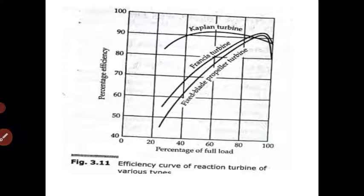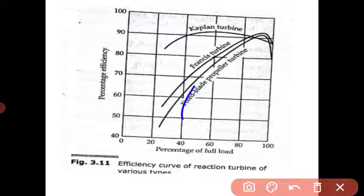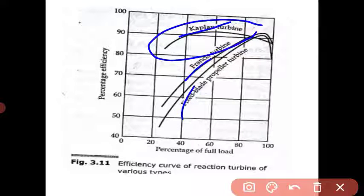The efficiency curve of reaction turbines of various types plots percentage of full load against percentage efficiency for different turbine types: propeller, Francis, and Kaplan. From this graph we can see that the highest percentage efficiency is obtained in the Kaplan turbine.